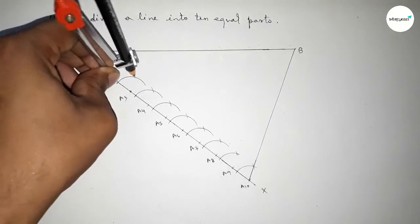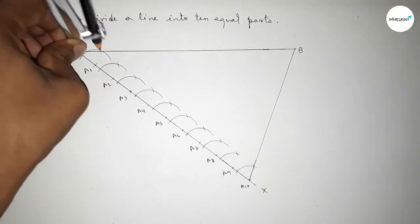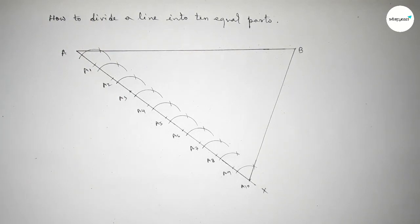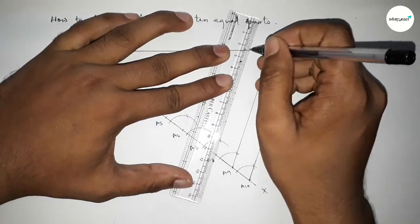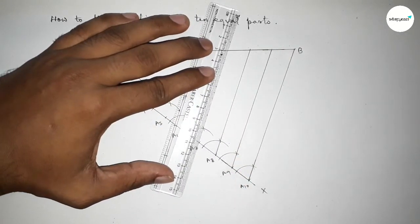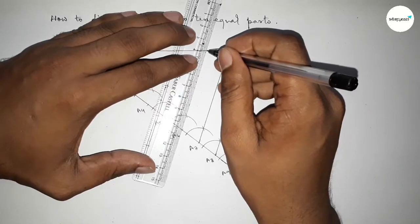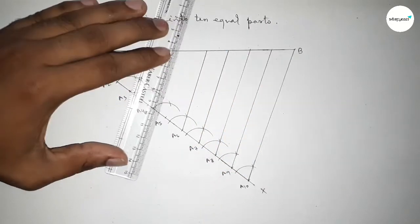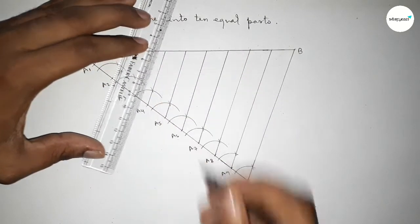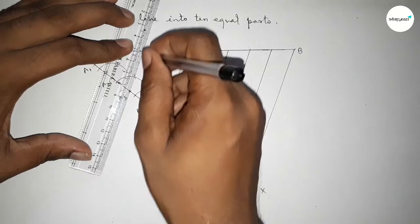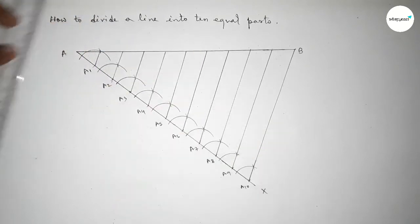Now cut the curve on each point using the compass. Then join the lines which are parallel to A10B. Joining all the lines — this line, this line, this line, this line, and the last line.